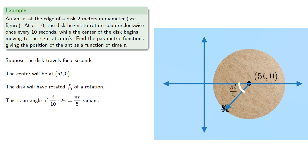Now remember coordinates specify how to get to a position from the origin. To get to the ant's position, you might go horizontally 5t to the center of the circle, and then backtrack to this position. This would put you in the right place horizontally. And remember since the circle itself is 2 meters in diameter, the radius is 1 meter, and so this length will be the cosine of πt/5. So the x-coordinate of the ant's position will be 5t minus cosine πt/5.